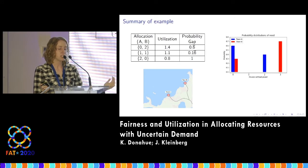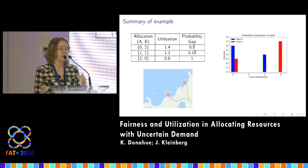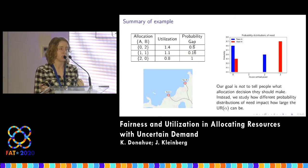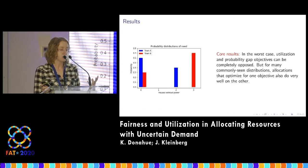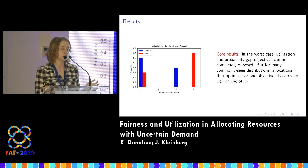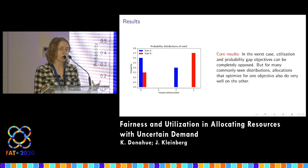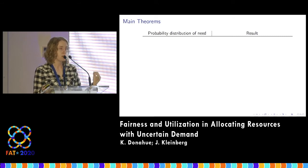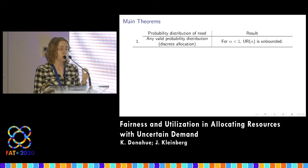Taking a step back: utilization and probability gap are functions of the probability distributions of need. Our goal is not to tell people which allocation to select, but to look at how spaces of probability distributions impact the space of choices available. The core results in the paper are as follows: in the worst case, the two objectives can be arbitrarily opposed; but for many commonly seen distributions, allocations that optimize for one objective also tend to do very well in the other.